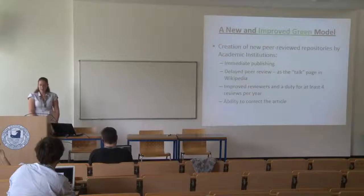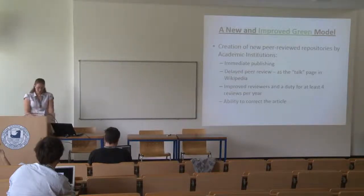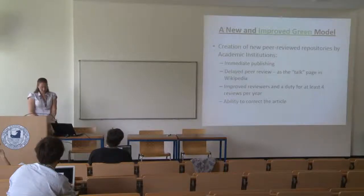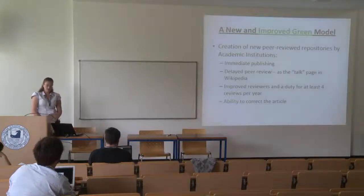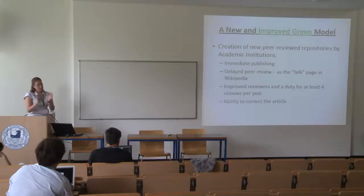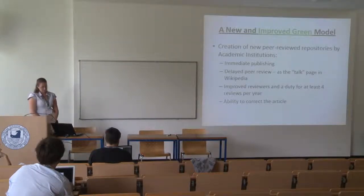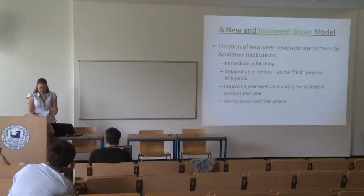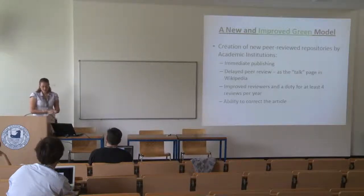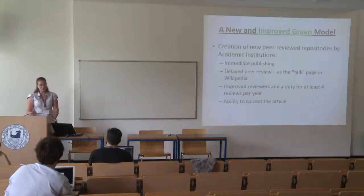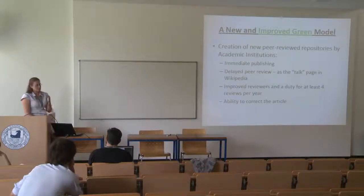The peer review can be done by talkbacks — and here we get into Wikipedia a little bit — added at the article page, or as we call it in Wikipedia, the talk section. The review process can be done anonymously or by name, by registered and approved researchers in the same field. Others can comment as well, but as outside observers. One might argue there are no incentives for researchers to review colleagues' articles. A possible solution is to create an academic duty to review at least four articles per year, with the review count tracked by the repository itself.